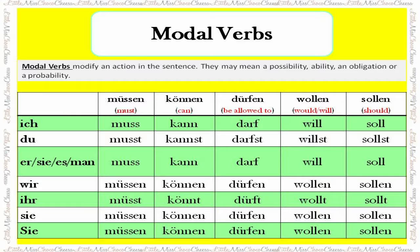'Müssen' means 'must'. Its conjugations are: muss, muss, muss, müssen, müsst, müssen, müssen.